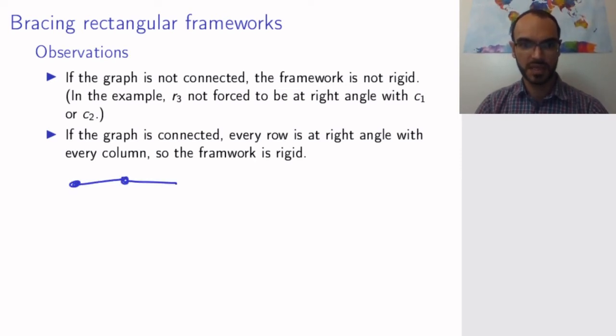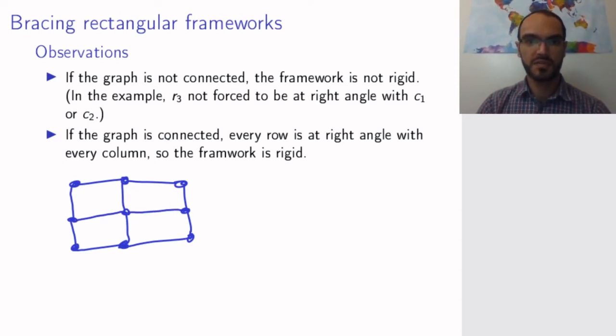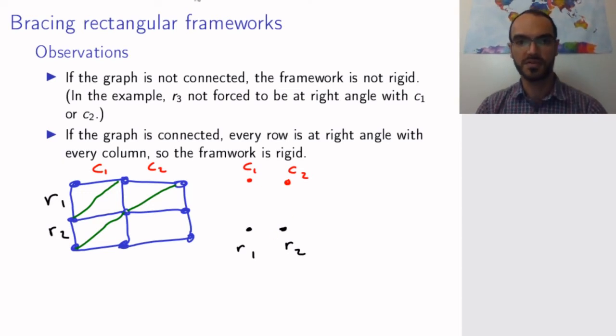Assume we have the following network or framework. Assume I have put braces here, here, and here—the thing I suggested in the beginning. So now we have columns 1 and 2 and rows 1 and 2. If I draw my bipartite graph—it is, by the way, bipartite because by construction I never draw any edge between columns or between rows; all edges go between a row and a column—here row 1 is attached to these two, and column 1 also to row 2.